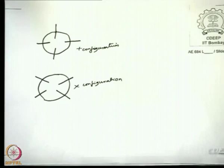What are the basic differences between these two types of configurations? Which one will you prefer — a plus configuration or a cross configuration? Most of you will prefer a plus configuration. Why? Because the pitch and the yaw motions are uncoupled — we have two distinct vertical surfaces and two distinct horizontal surfaces.